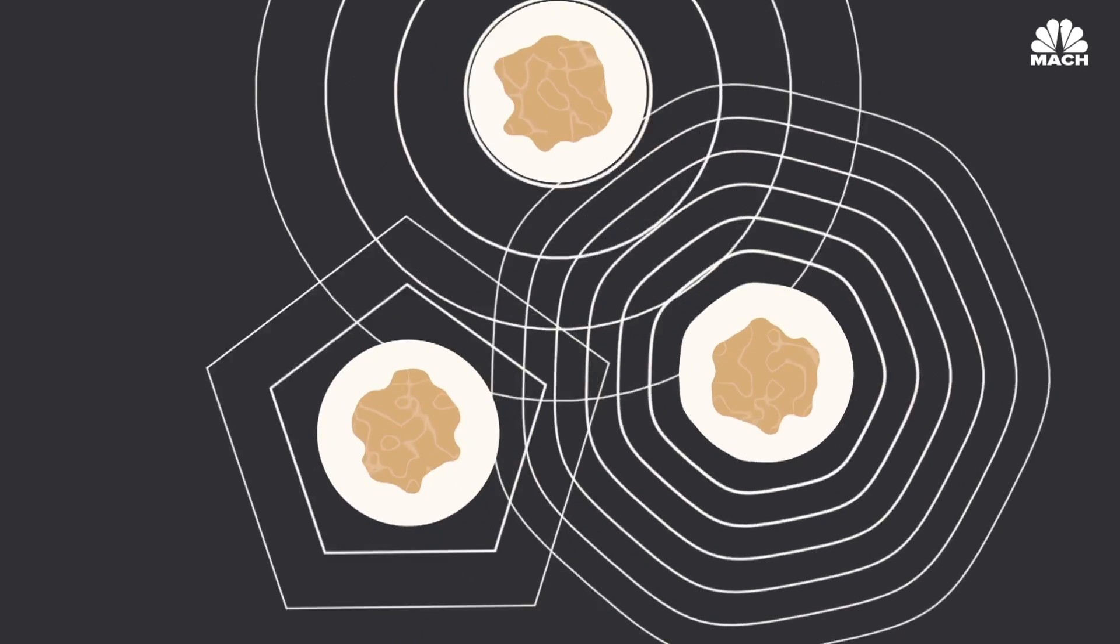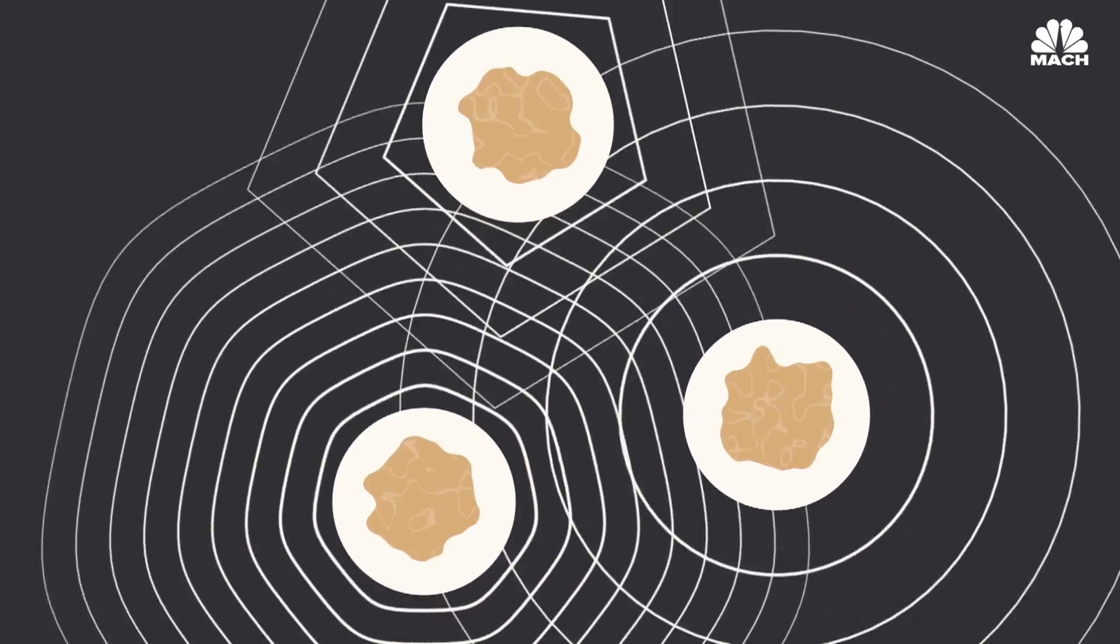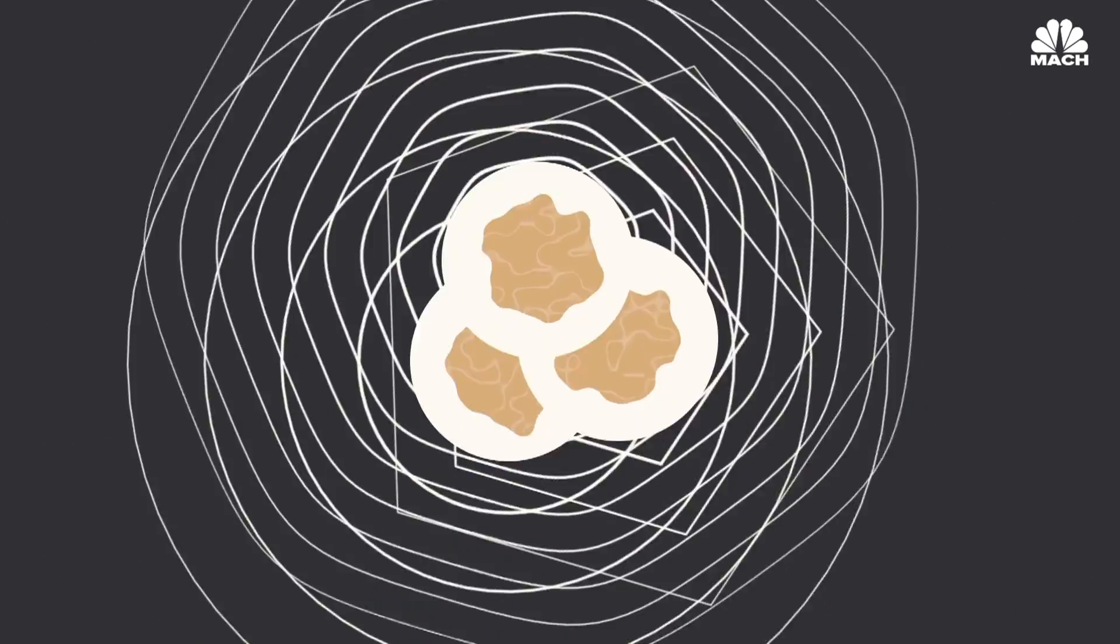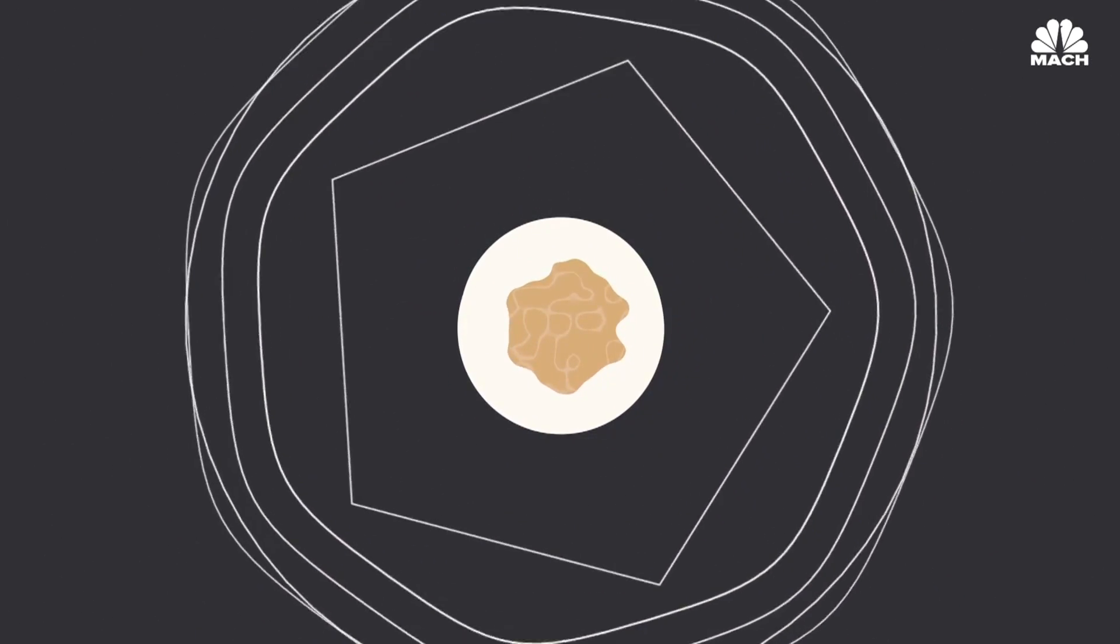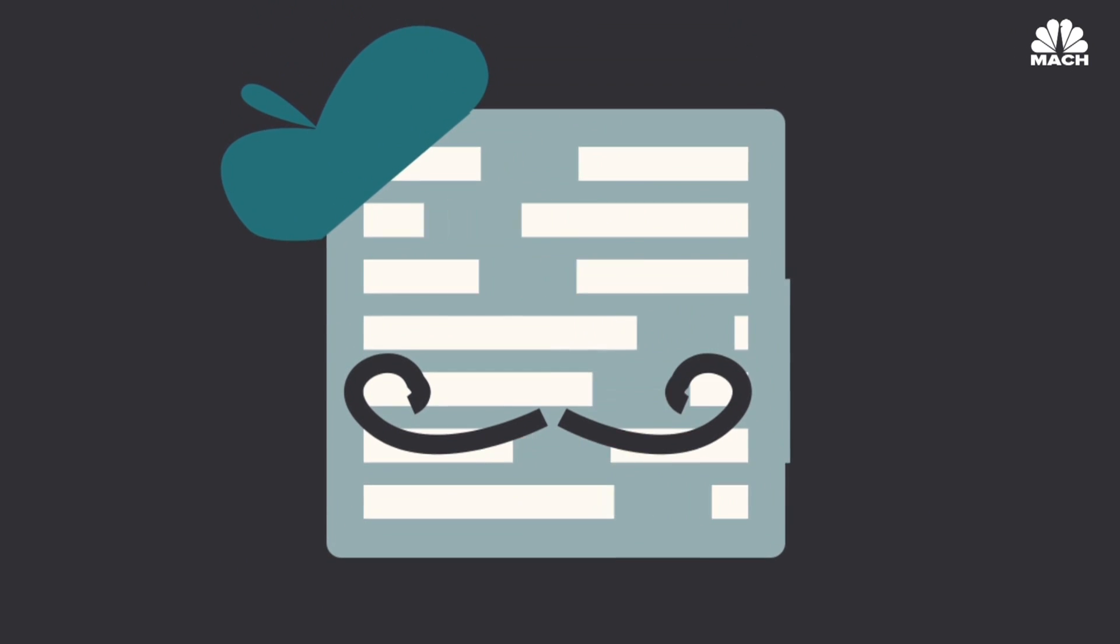Each of the uneven surfaces absorbs and deflects sound waves differently, and they work together to spread sound evenly across the auditorium. Other examples of parametric design can be found in